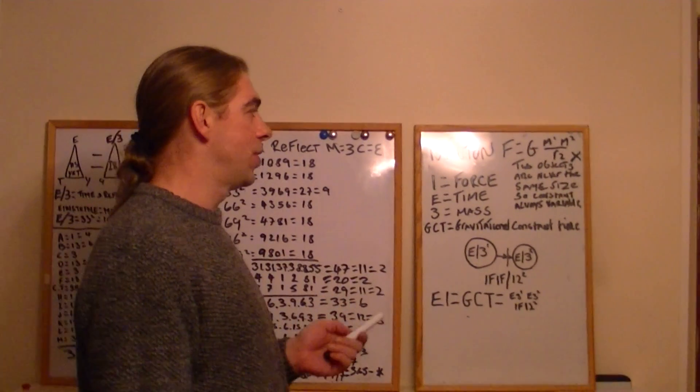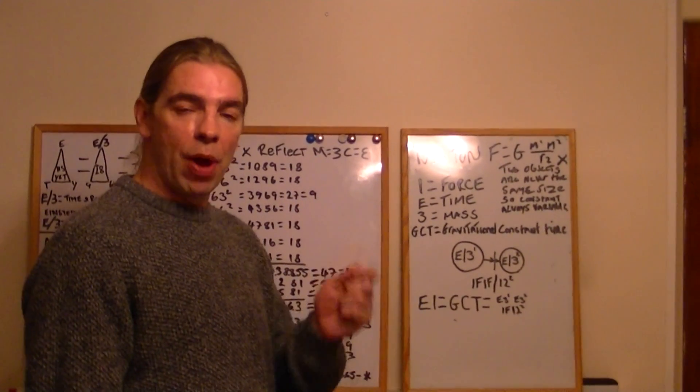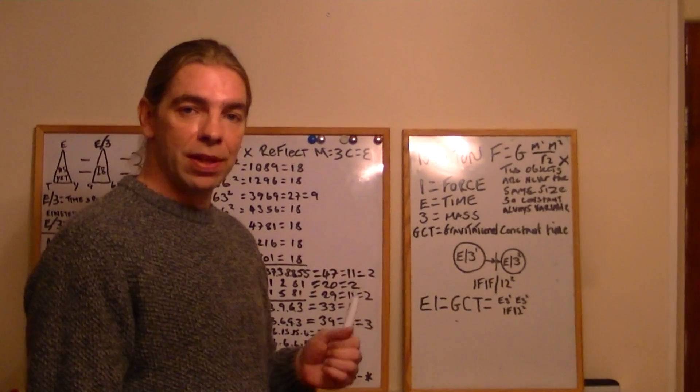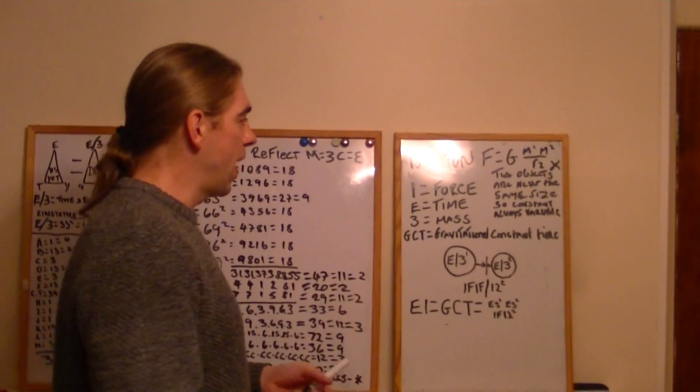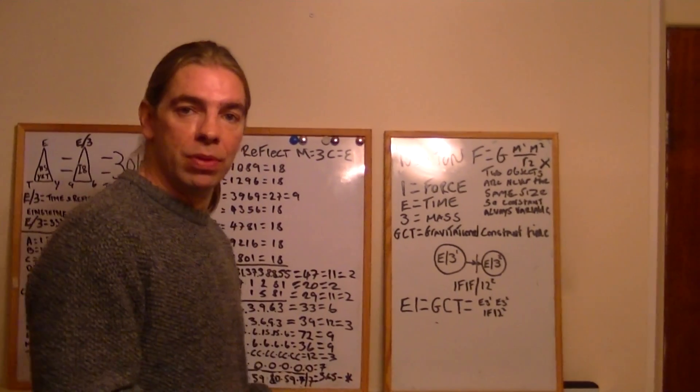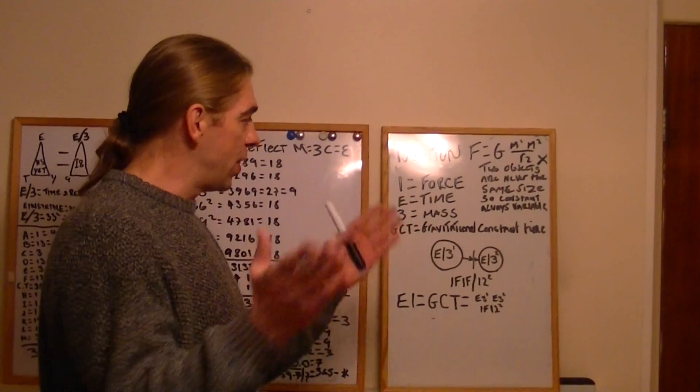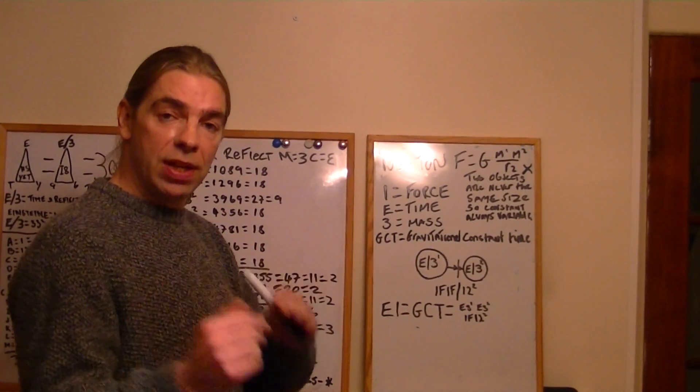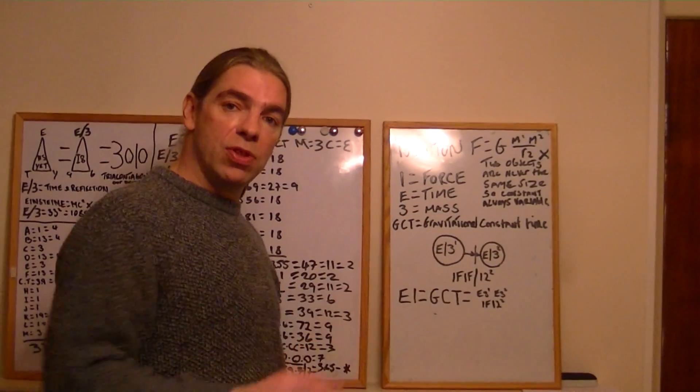The reason Newton is wrong is that his calculation would only stand up if both objects, both planets or spheres, were of exactly the same size. Only then would you get a constant in the middle because no two objects are the same size, so it's a variable constant between the two. So, in fact, the gravitation would always be further towards the smaller object.